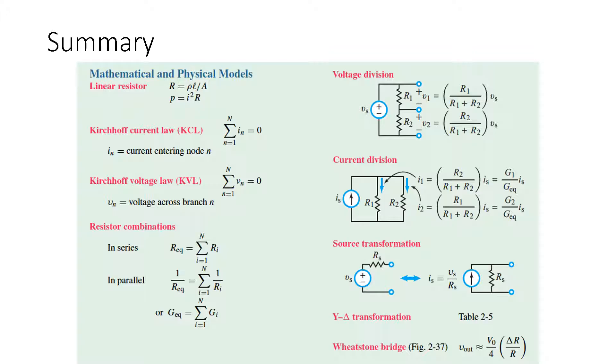If we look down underneath that for source transformation, a voltage source with a resistor directly in series with it can be transformed into a current source with a resistor in parallel. And vice versa, you can go back and forth. This is important sometimes because sometimes we're going to get current sources and we're not going to know exactly how to solve that directly off the bat. But if we can transform it into a voltage source with a resistor in series, it makes it much easier to solve.